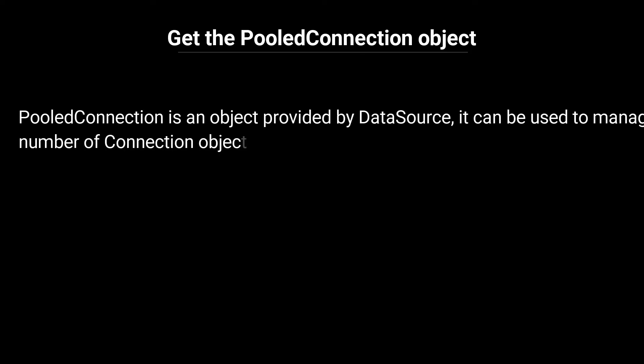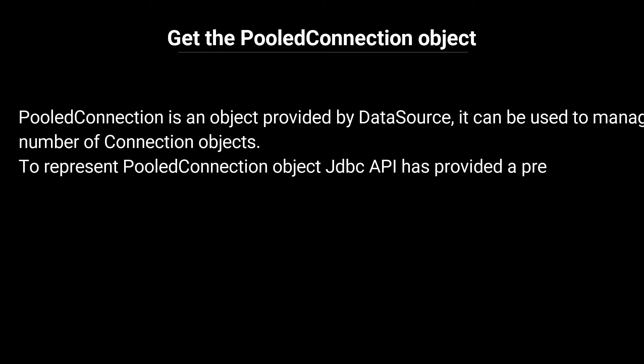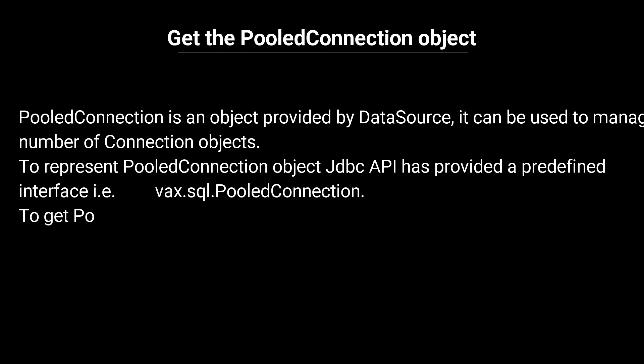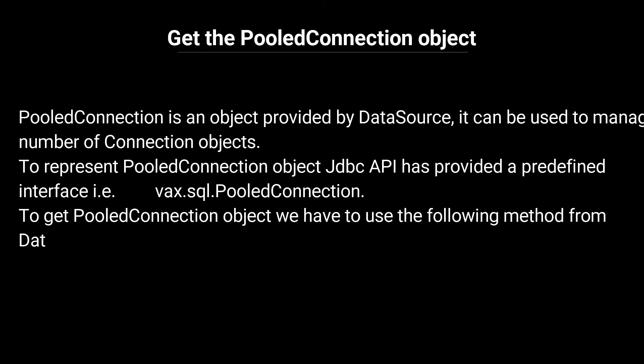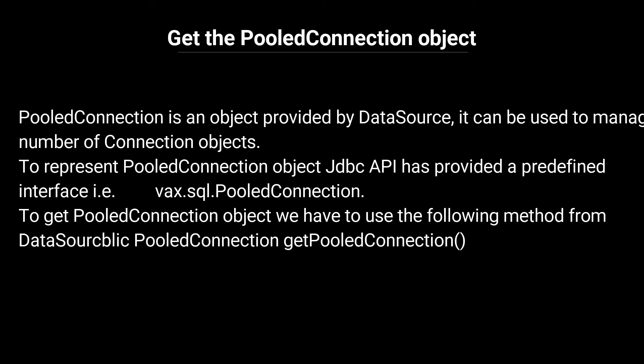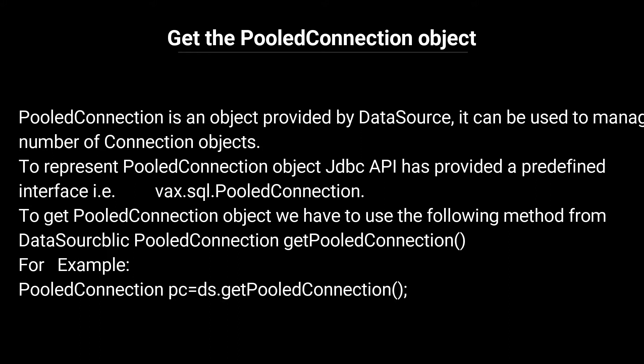Step 3: Get the PooledConnection object. PooledConnection is an object provided by the DataSource and can be used to manage a number of connection objects. To represent a PooledConnection object, the JDBC API provides the interface javax.sql.PooledConnection. To get the PooledConnection object we use the method: public PooledConnection getPooledConnection(). For example: PooledConnection pc = ds.getPooledConnection();